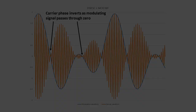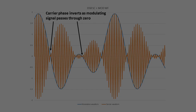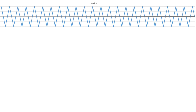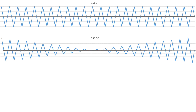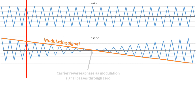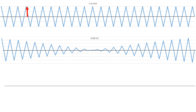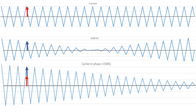Looking back at the DSBSC signal, concentrating on the area where the modulating signal falls through zero to a negative value. For simplicity the carrier is shown as a triangular wave but the principles apply equally to a sine wave. The DSBSC signal and the carrier are in phase on the left — reaching positive peak at the same time. As the modulating signal passes through zero, to the right of that point the carrier phase is opposite to the DSBSC signal phase. If we add the carrier and DSBSC signal together — as happens with the space modulation of ILS signals in the far field — we get a resultant signal. Passing this through an envelope detector recovers the modulating signal.